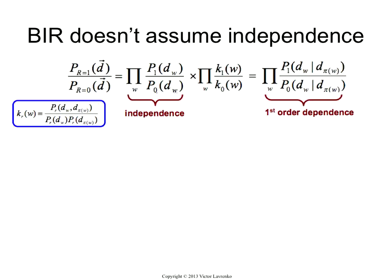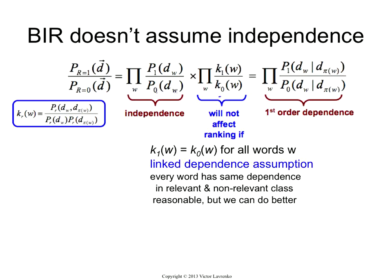Under what condition would this not affect the ranking? So that the ranking from the independence model is the same as the ranking from the dependence model? This won't affect the ranking if k1 is equal to k0. It won't affect the ranking if k1 and k0 are both equal to 1. So k1 equals 1 — what does it mean? It means that the joint probability is the same as the product of the marginals. Assuming k1 equals 1 is exactly the same as assuming independence between the terms.